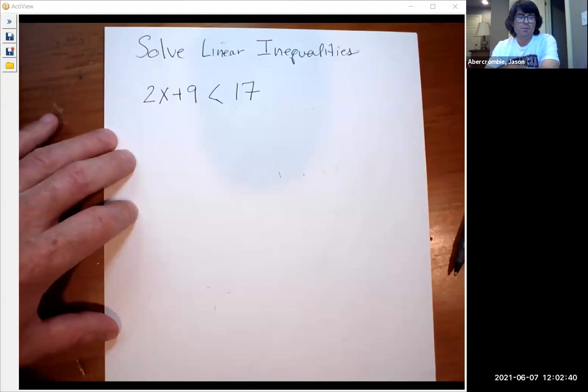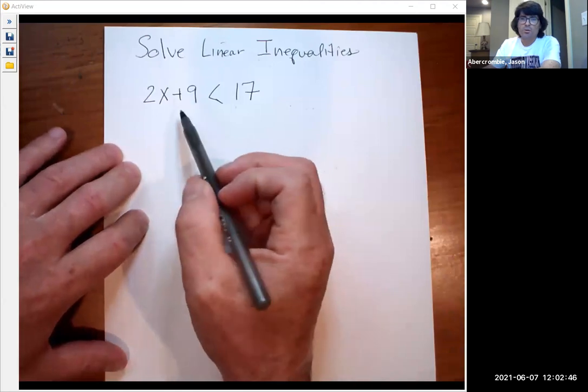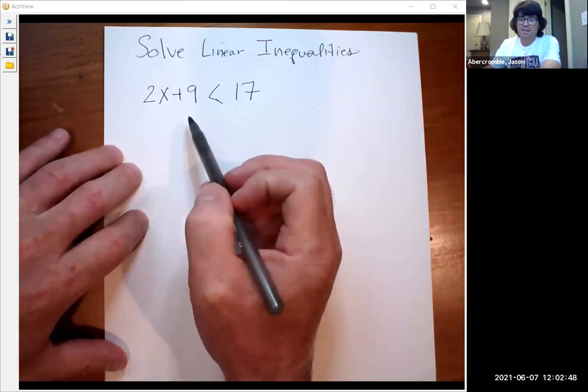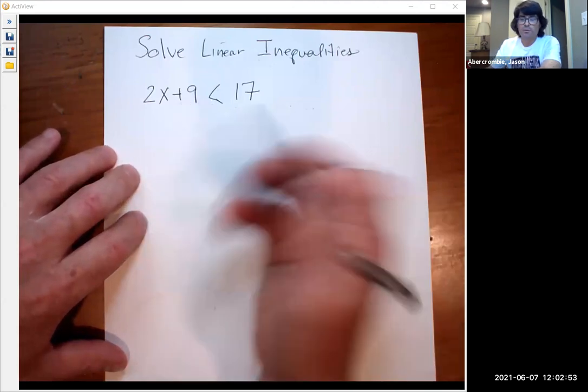Good morning, everybody. In this video, we'll be talking about solving basic linear inequalities. I've written one up here, and our goal is to get x by itself on one side of the inequality. This is a less than, and then graph what we have.